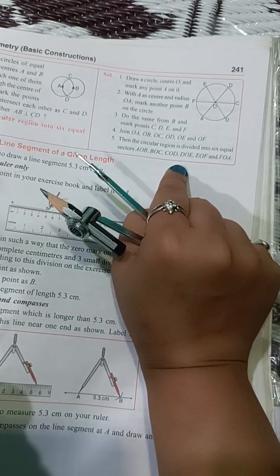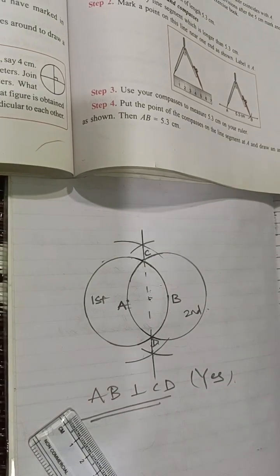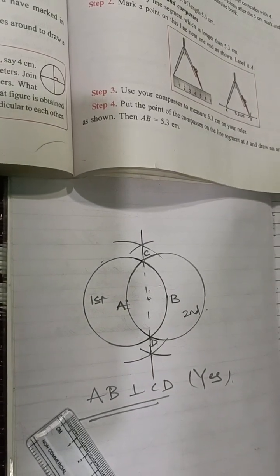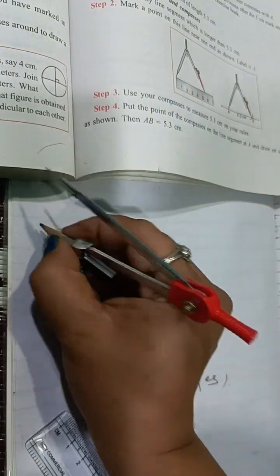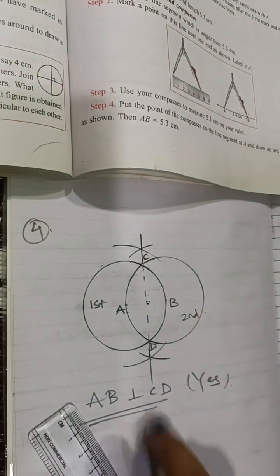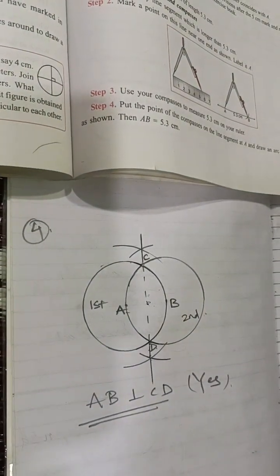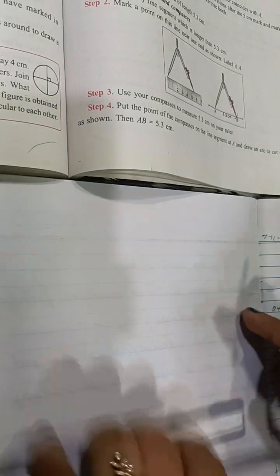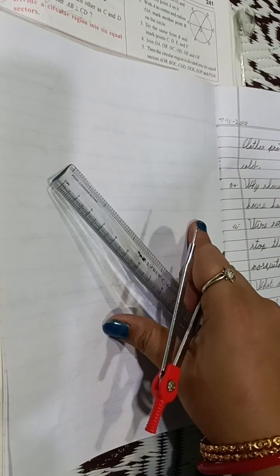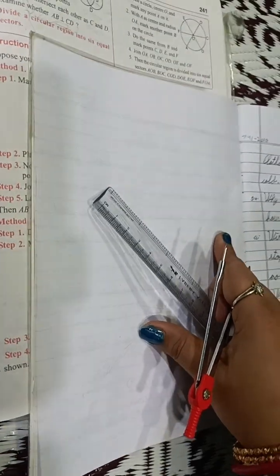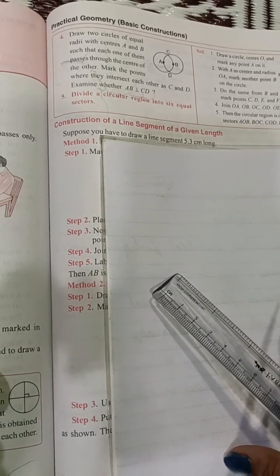The six sectors are AOB, BOC, COD, DOE, EOF, and FOA. So AB is perpendicular to CD — that was question number 4. Now question number 5: Divide a circular region into 6 equal parts.